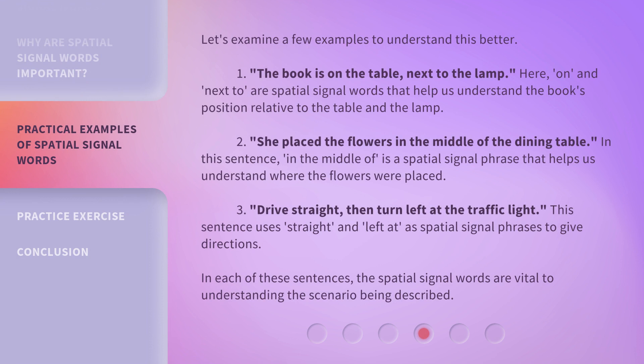Here, 'on' and 'next to' are spatial signal words that help us understand the book's position relative to the table and the lamp. In this sentence, 'in the middle of' is a spatial signal phrase that helps us understand where the flowers were placed. Drive straight, then turn left at the traffic light — this sentence uses 'straight' and 'left at' as spatial signal phrases to give directions. In each of these sentences, the spatial signal words are vital to understanding the scenario being described.